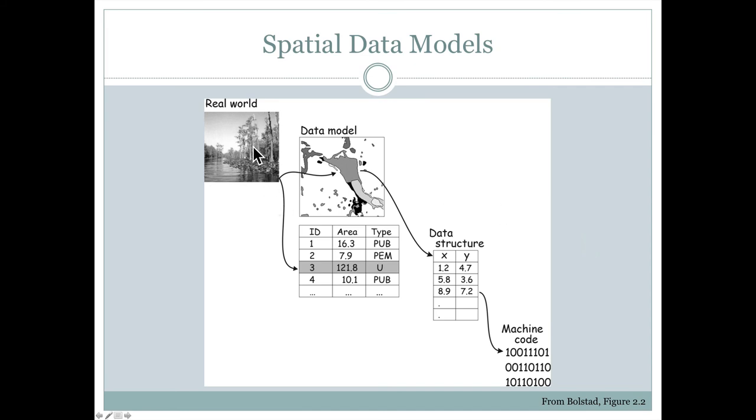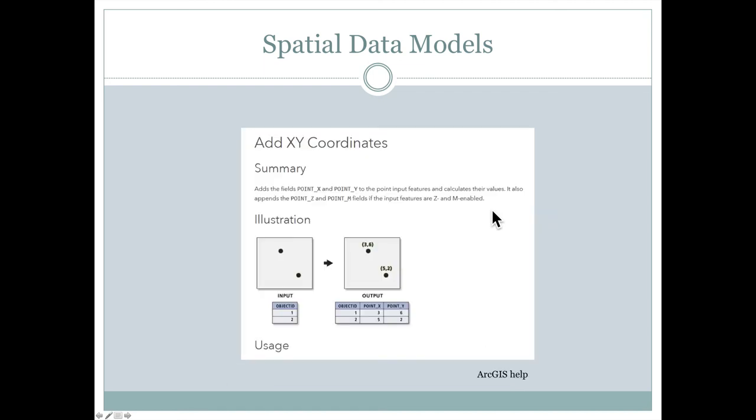So once again, the spatial data model takes the real world, breaks it down into a geographic side and an information system side. The geographic side is what we see on the map. The information system side is what's in the attribute table. What we don't see in the attribute table is the data structure associated with the X and Y coordinates that make up these outlines here. But we can find those if we want to.